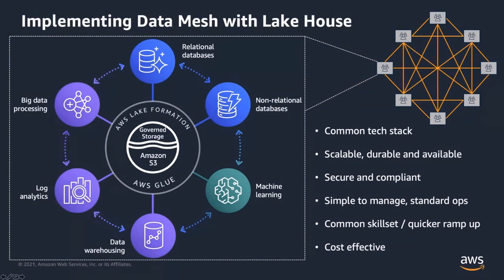Bringing it all together: the lake house approach includes a data lake in the middle with subsidiary services around it, and those services with Lake Formation make it easier to build data products offered to users. From a data mesh perspective, that lake house comprises a data domain — an organization, a team, a department — that is one unit within the data mesh. It maintains, owns, and secures its data and offers it as a product. A lake house approach simplifies building the data domain and can be duplicated across different domains in your organization.